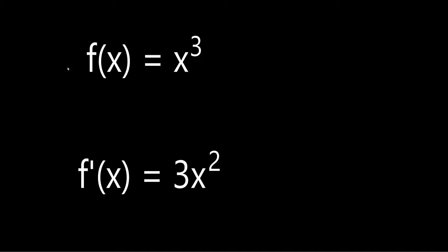Here we have a little example. f of x equals x to the power of 3. To form the derivative, you would have to multiply the 3 with the x and subtract 1 from the 3 up here. And you'll end with 3x to the power of 2.